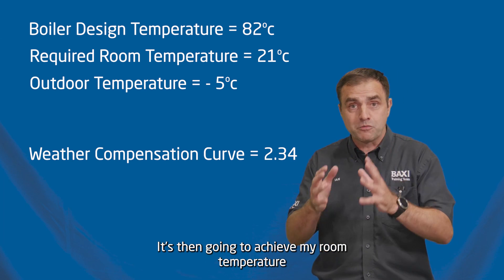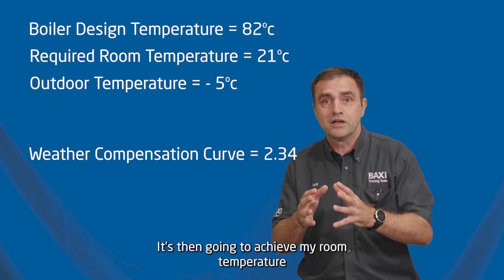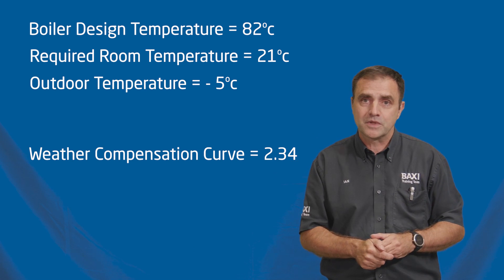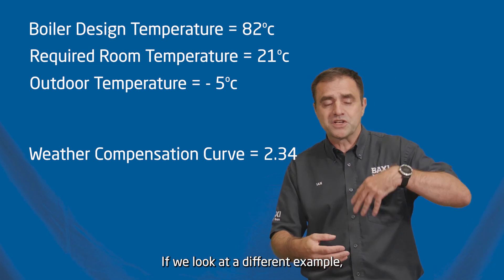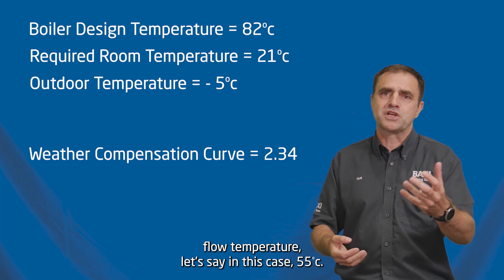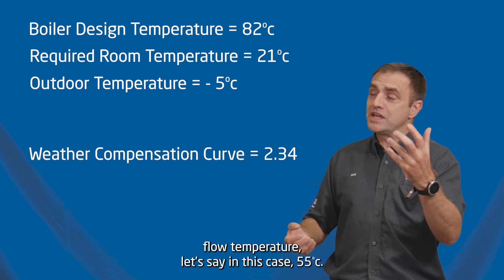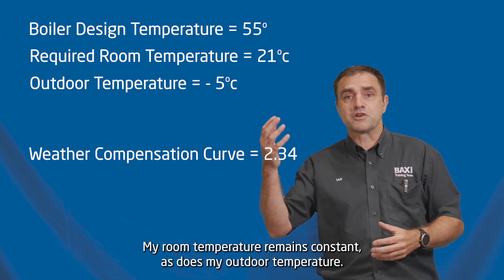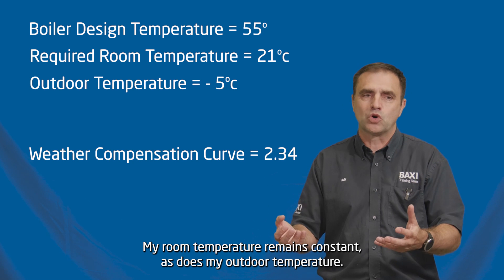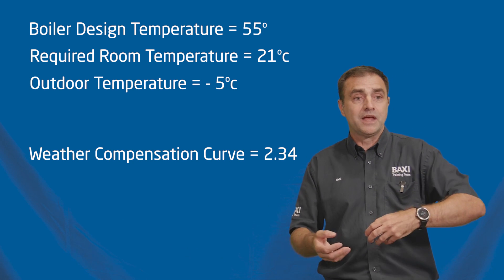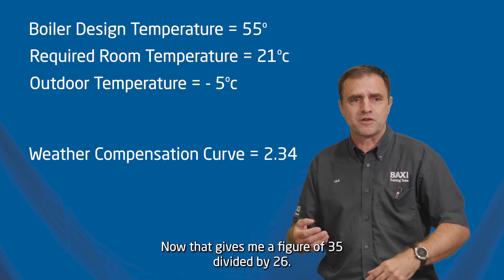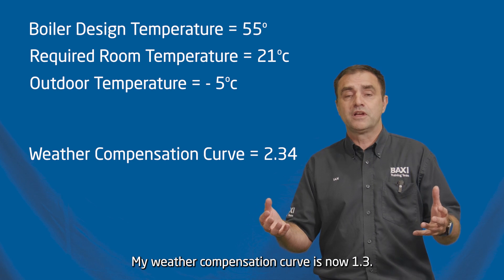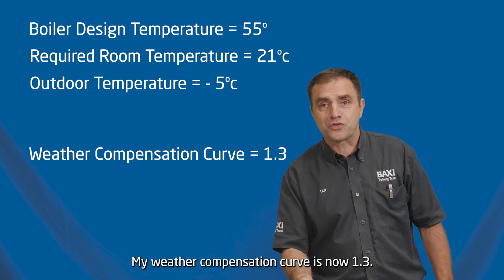It's then going to achieve my room temperature at a lower flow temperature, saving me money. If we look at a different example, we can take a lower flow temperature — let's say in this case 55 degrees. My room temperature remains constant, as does my outdoor temperature. Now that gives me a figure of 35 divided by 26, and my weather compensation curve is now 1.3.